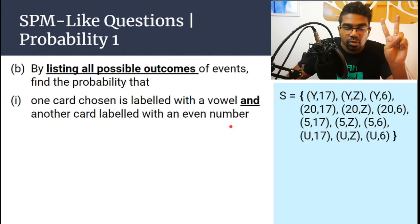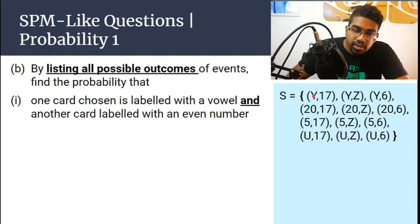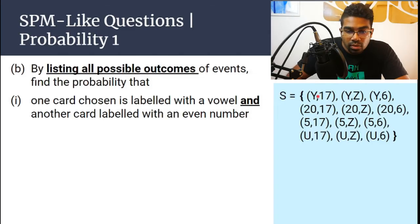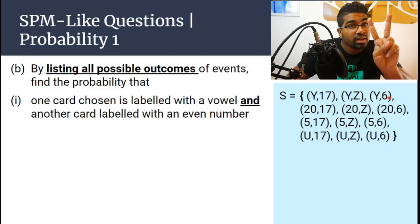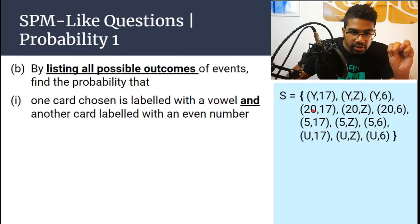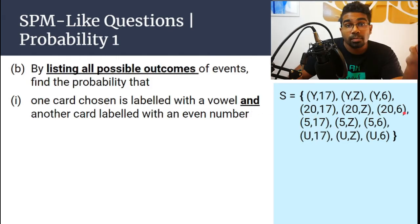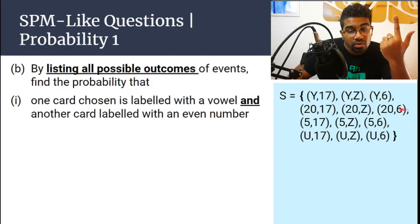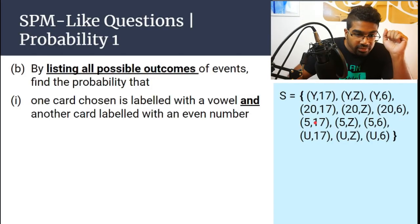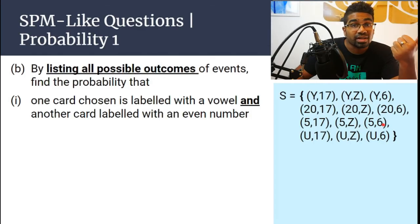There's a keyword to look out for here — AND. When we have AND, both conditions must be satisfied. Both the vowel and even number must be there. Let's look at the sample space. Y is a consonant, not a vowel, so we can ignore all the Y outcomes. For 20: 20 is an even number, but we need a vowel together with it. Looking at 20,17 — 20,Z — 20,6, there is no vowel, so we cannot take any of these. And 5 is not an even number, so nothing can be taken from 5 either.